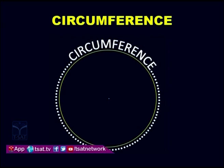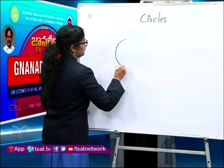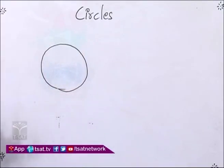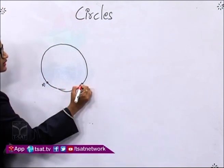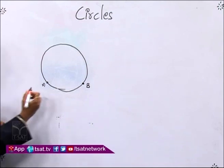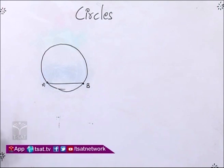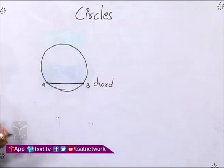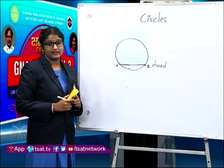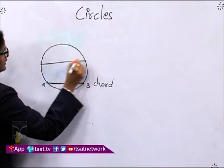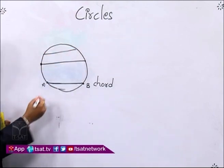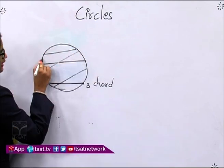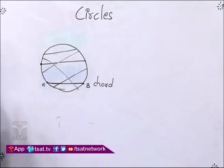Now, I will take a circle and take any two random points on the circle and join them with a line. This line is a special line because it is being inserted in a circle — we name it a chord. A chord is a line segment which joins any two points on the circumference of a circle. All such lines joining two points on the circumference are chords.